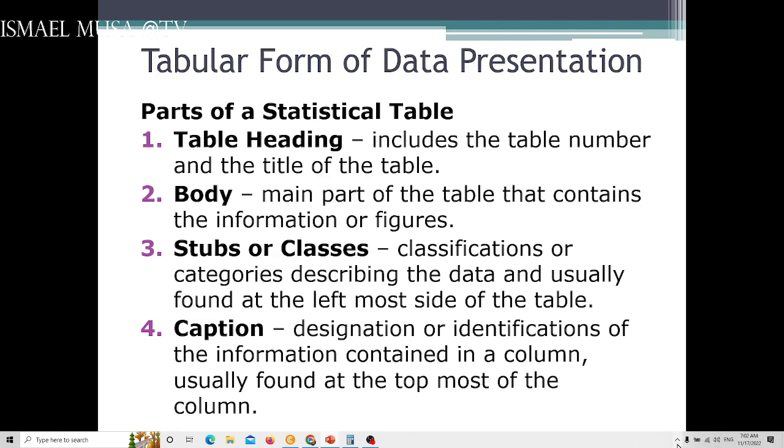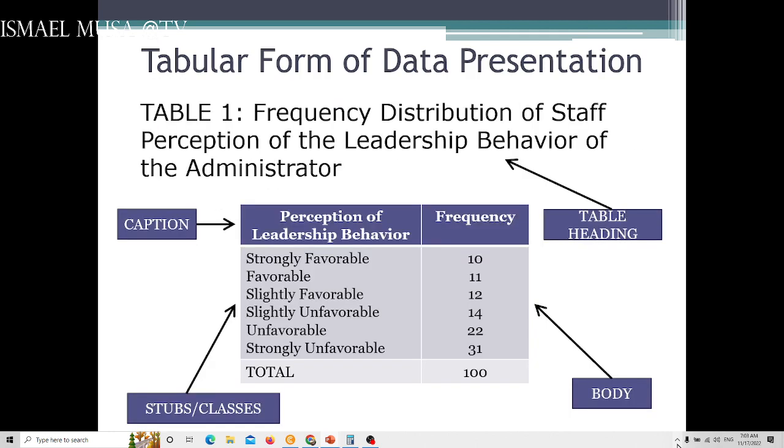In here, you may use either categorical or numerical data. Usually, this is always found at the leftmost side of the table. Then it's always a practice to have caption for each column. A caption is a designation or identification of the information contained in a column, usually found at the topmost of the column. So this is where you place your caption.